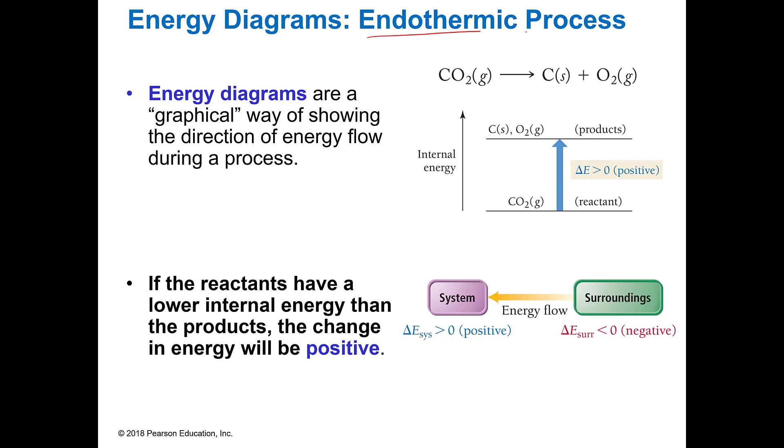And in an endothermic process, we're going to go from a lower energy to a higher energy. So when I go from low to high, I have to take in energy. When I do that, I'm going to have a higher energy level when I get done than I did at the beginning. So my change in energy in my system is going to be positive because I've increased. I took it from the surroundings, so that will decrease.